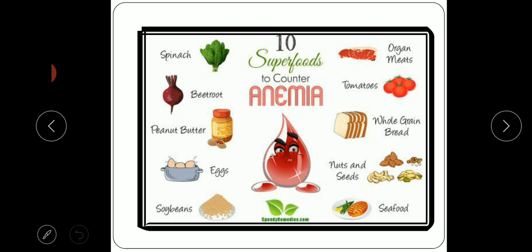Then she consumed a lot of iron content food and green leafy vegetables. These are all the foods that should be eaten when we are anemic: spinach, beetroot, peanut butter, egg, soya beans, organ meats like liver and goat liver. Non-vegetarians can consume iron from non-vegetarian food itself. Tomatoes, whole grains, nuts and seeds, seafoods - all these foods contain iron which helps to gain our hemoglobin level.